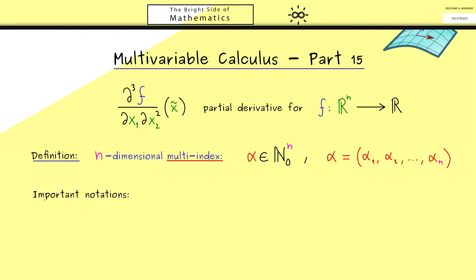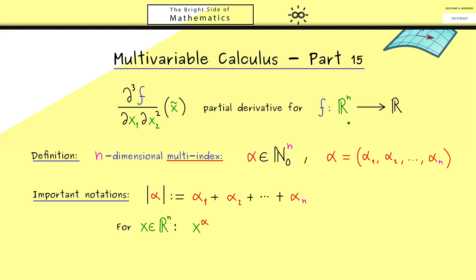We can see this immediately when we look at the following important notations. The first thing to learn is the absolute value — the length of a multi-index. It's simply the sum of all components, and this will be very helpful for describing the order of the partial derivative. The multi-index notation is also useful when dealing with a vector x in R^n, where we can define x to the power alpha. We simply define this as a product of normal powers: first we have x1 to the power alpha1.